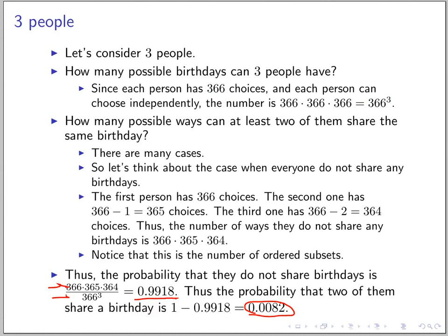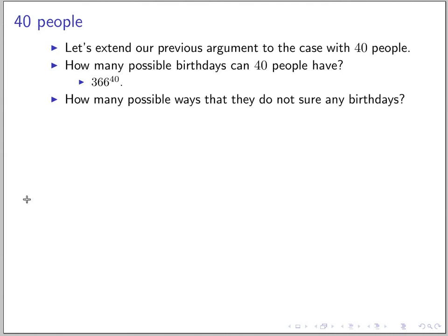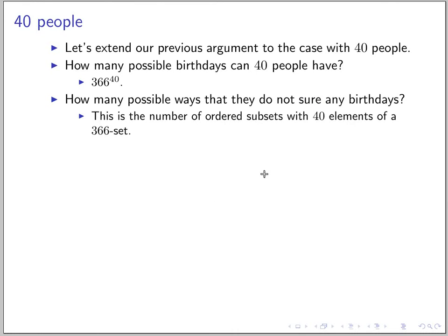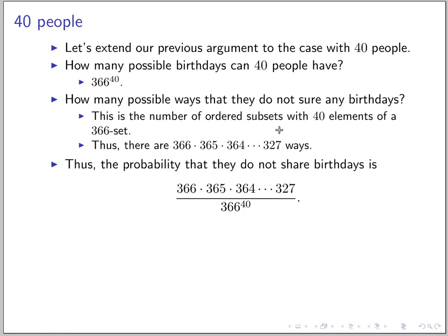Now how about 40 people? How many possible birthdays can 40 people have? Using the same argument, the total is 366 to the 40th power. The number of arrangements where no one shares a birthday is like the ordered subset — 366 × 365 × ... down through 40 terms. So the probability that 40 people do not share any birthday is this product.